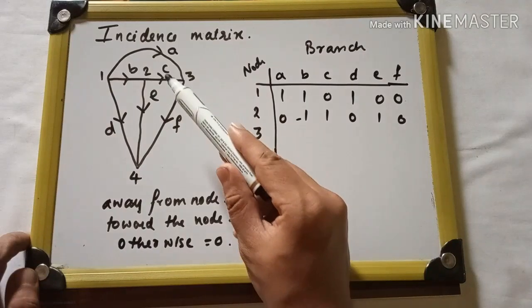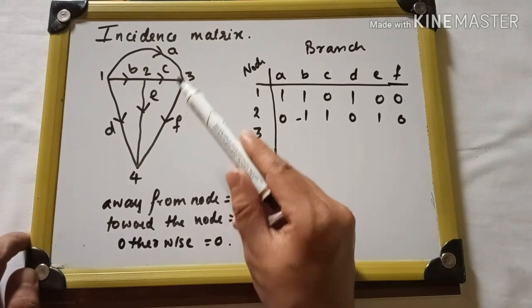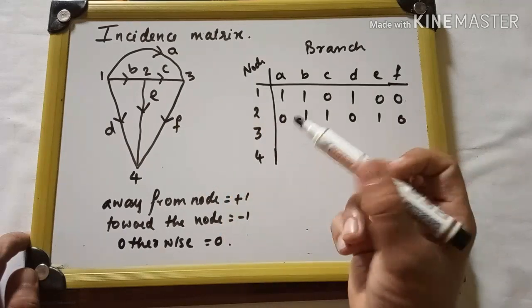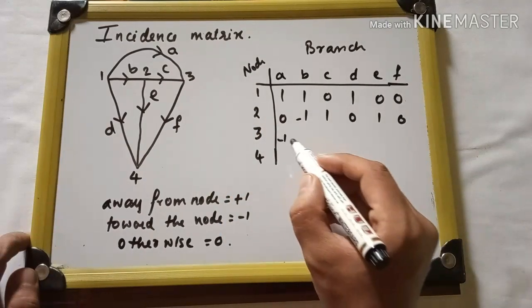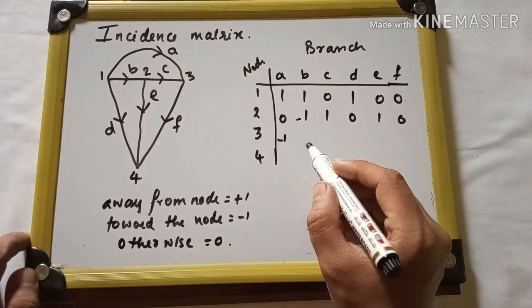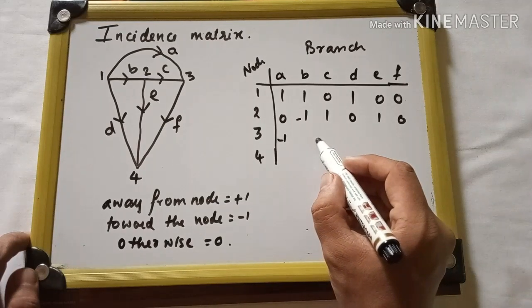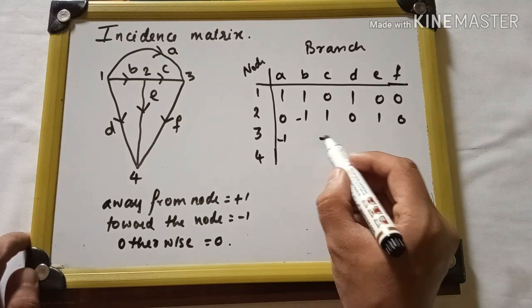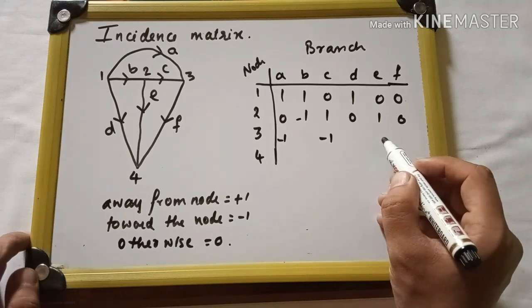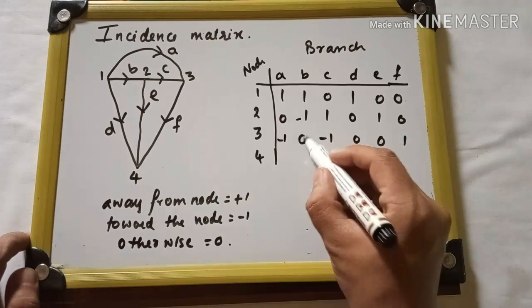For node 3, branch c is coming in, branch a is coming in, and branch f is going away. For a we write minus 1, for c we also write minus 1 since they are coming towards the node, and f is going away so plus 1. Other branches are 0.